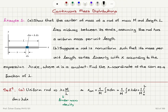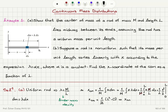I put one end at the origin, and the other end is at L. So we have x times lambda, which is M over L, dx. The M's cancel, and we are left with 1 over L times x squared over 2, evaluated between 0 and L. So the x-coordinate of the center of mass is 1 over 2L times L squared minus 0, which gives L over 2. The center of mass is located right in the middle at L over 2.